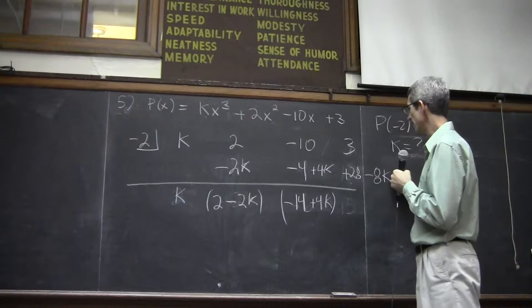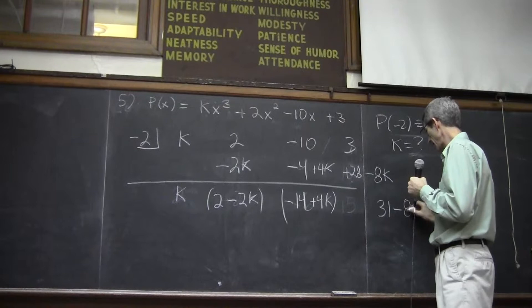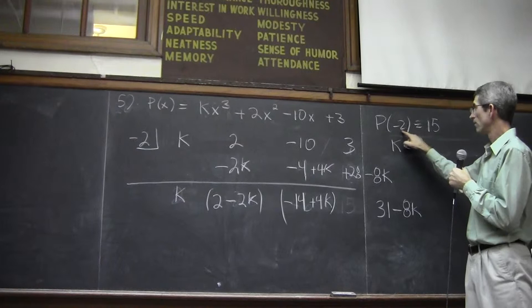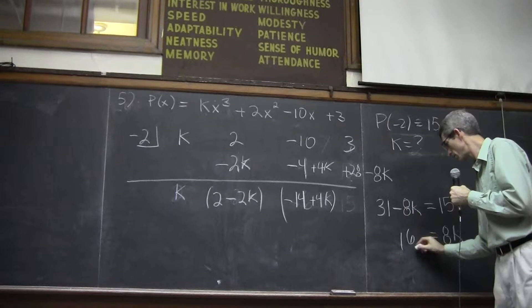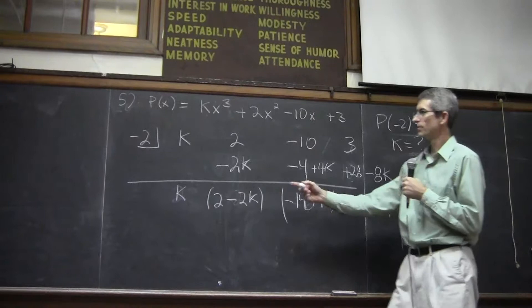And then when I combine that, I'm going to have, I'm going to write it over here. 31 minus 8k is my final term. But in this particular problem, they told us that when we use negative 2, we should get 15. So I'm going to set it equal to 15. And now I can solve for k. Bring k over, bring the 15 over k equals 2, which we knew from before using Alejandro's method.